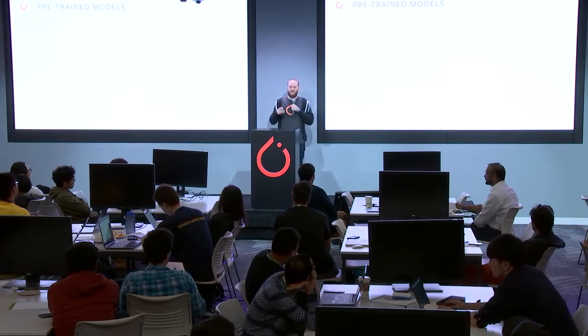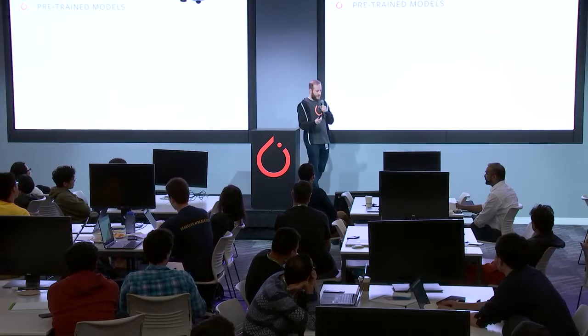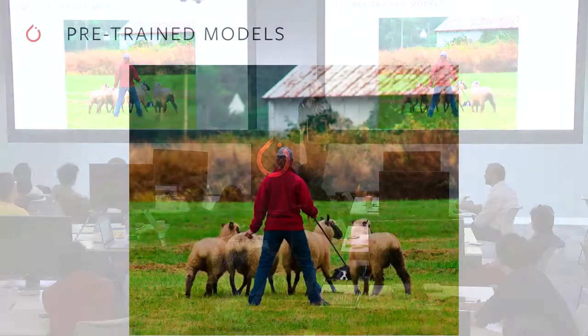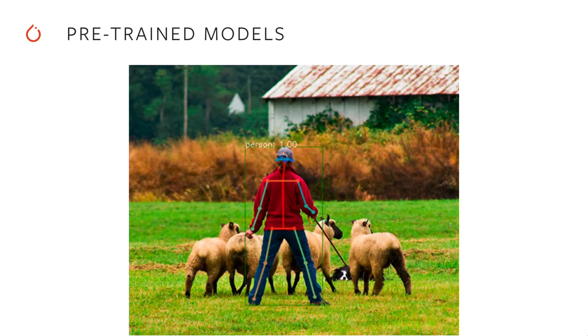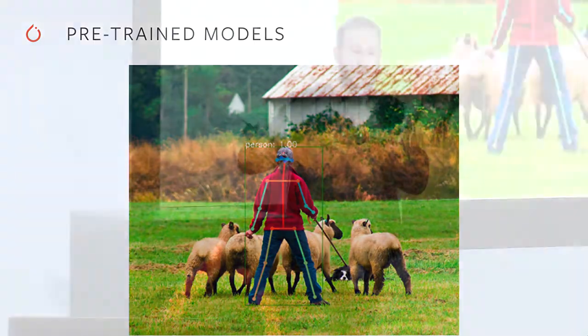In terms of what that looks like: we have models for semantic segmentation and instance detection, which allows you to detect individual objects in an image for different classes. If you're more interested in understanding the pose of people in the image, we also have keypoint detection where you detect an arbitrary number of people in the image with their joints, so you can inspect pose from the image without needing full 3D inference.